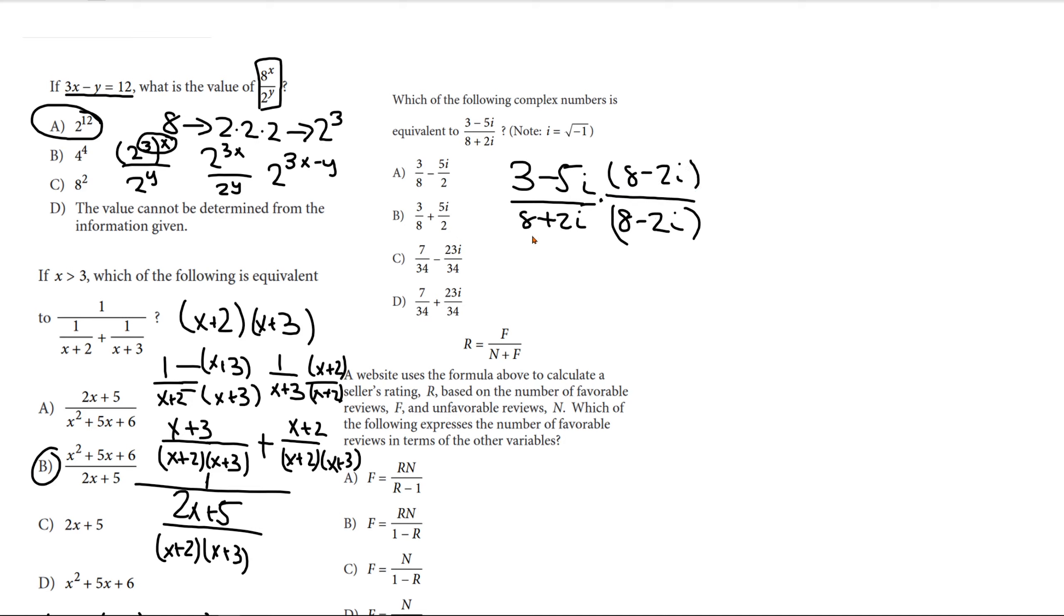So, if we multiply this, we will get... Let's do the bottom first, actually. So, 64 plus 16i minus 16i minus 4i squared. And I got that through FOILing. So, 8 times 8, 8 times 2i, 8 times negative 2i, and positive 2i times negative 2i. And then, let's do the FOIL on top. So, that will be 24 minus 40i minus 6i. And lastly, plus 10i squared.